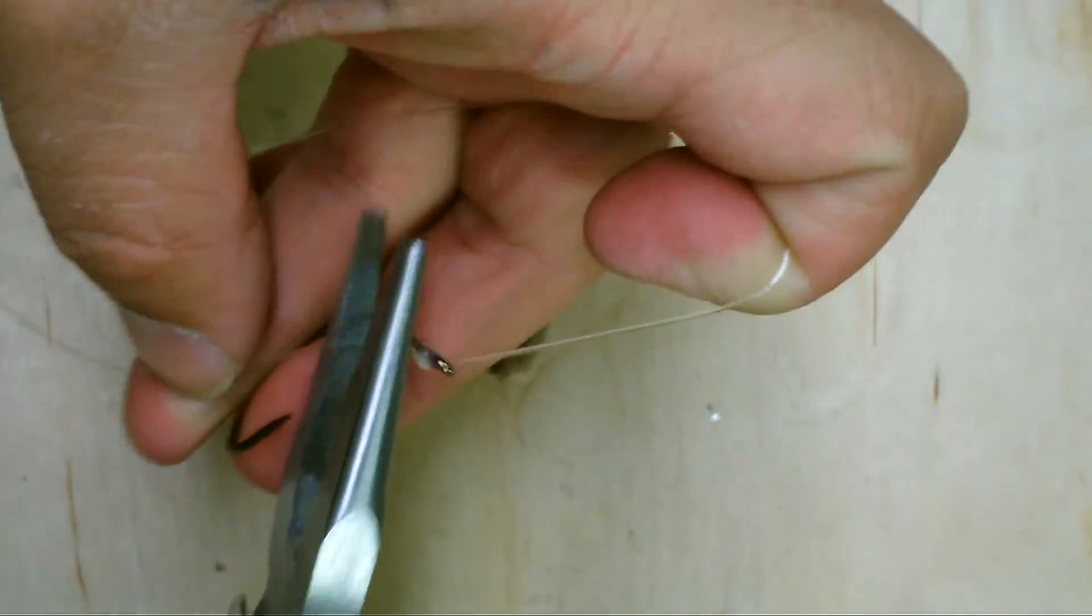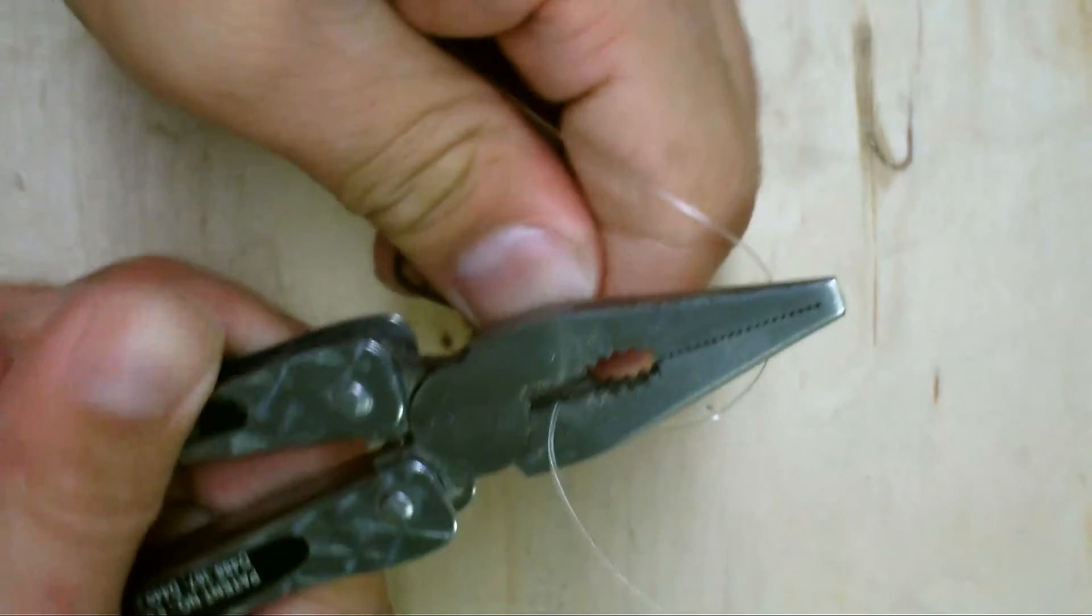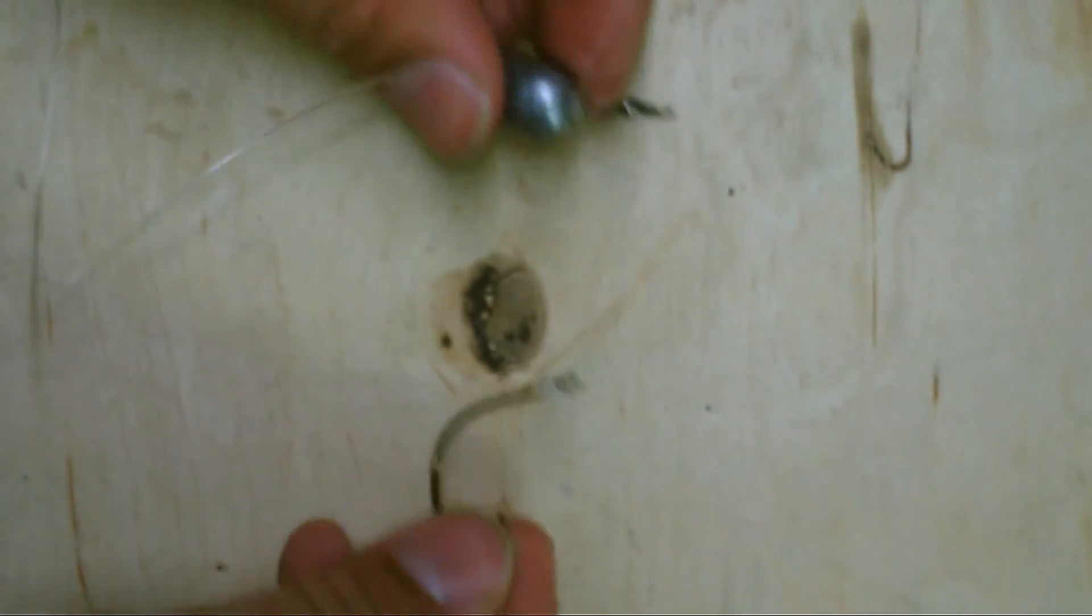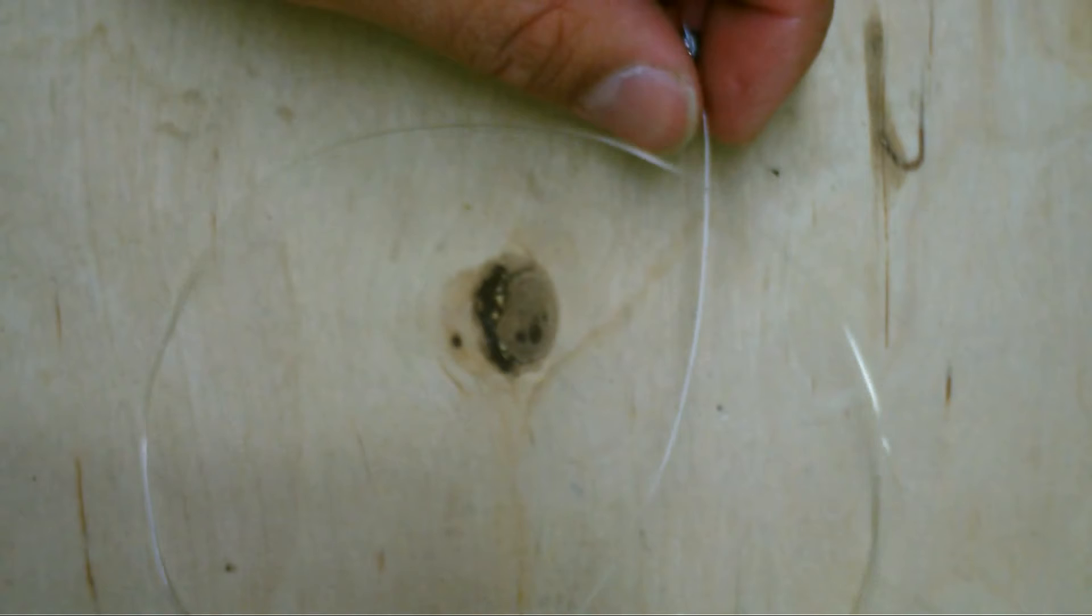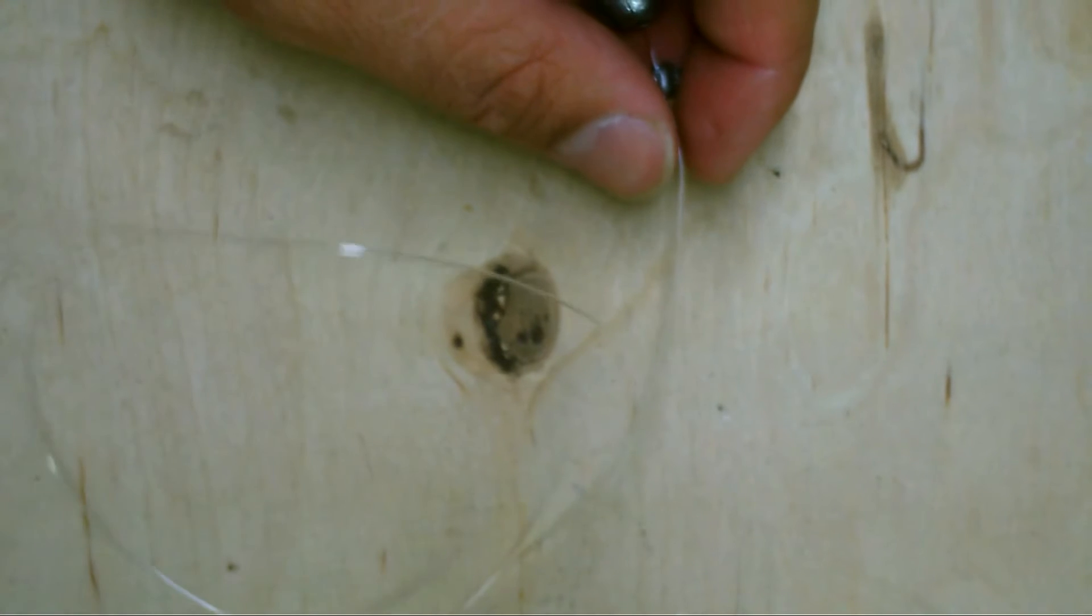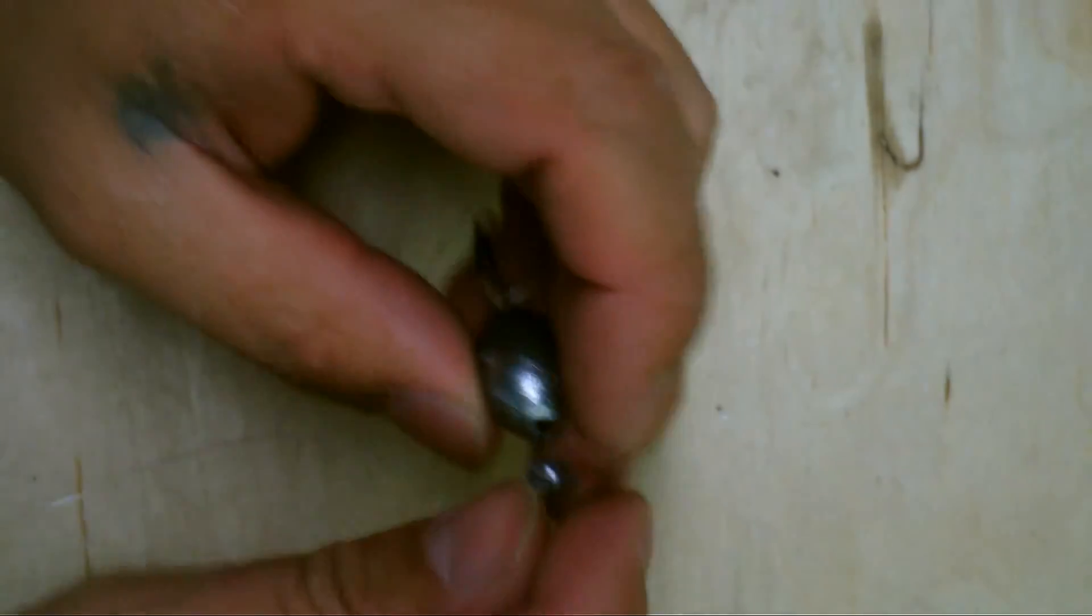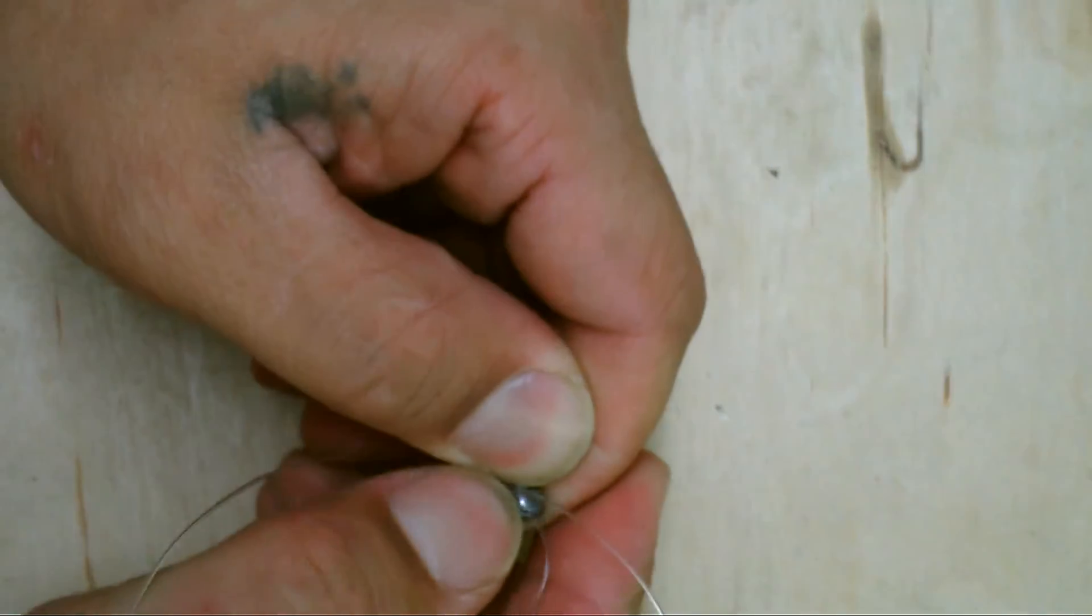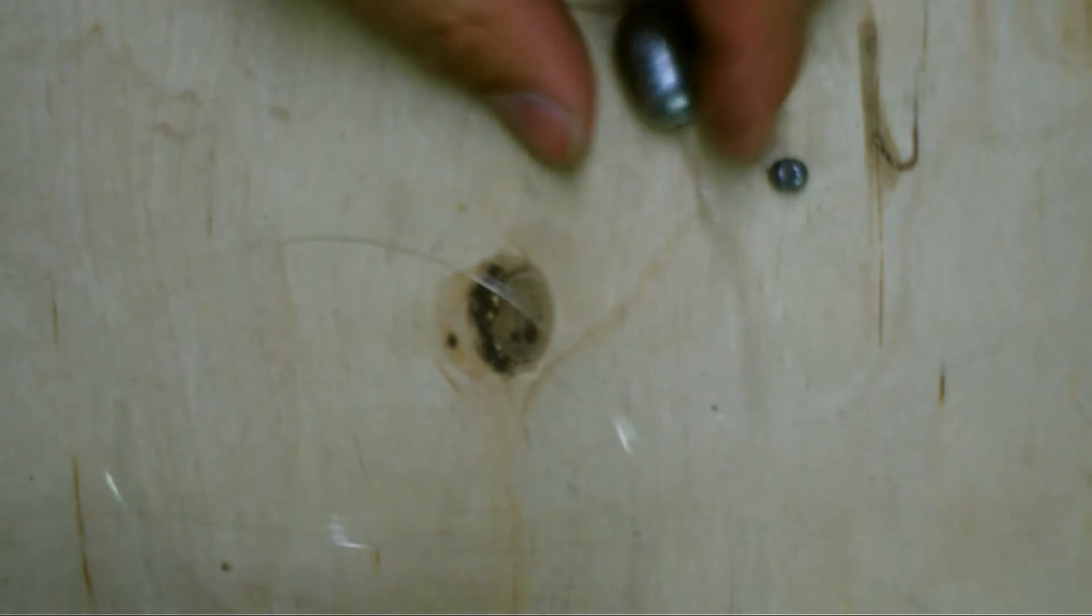And cut off the excess. It's just that simple, folks. Now on this one, I usually use about a 24-inch leader. Okay, you can actually go ahead and make a three-foot leader and use this same exact setup to make what is called a fish finder, and I'll show you that in just a second.